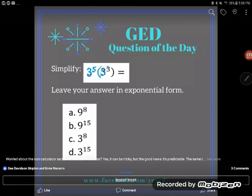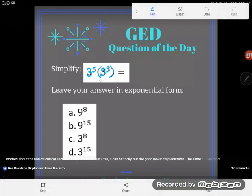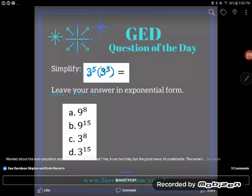Times 3 to the third power. When two things are shoved together, two numbers are shoved together like this with only parentheses between them, they're multiplication. So 3 to the fifth power times 3 to the third power. Now interestingly they asked me to do something in the problem.